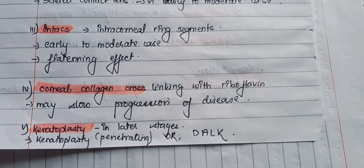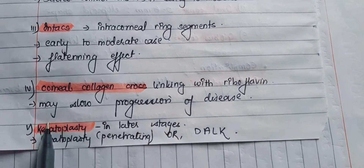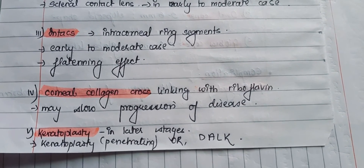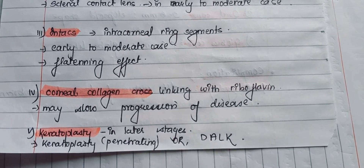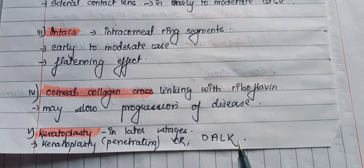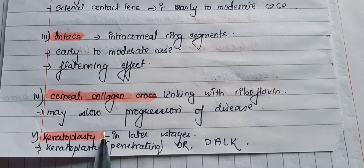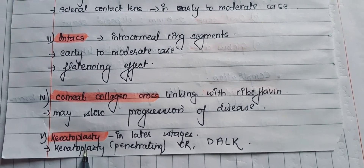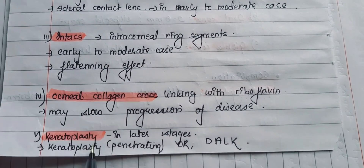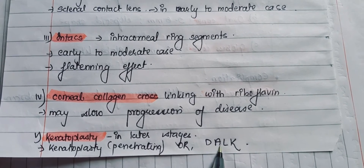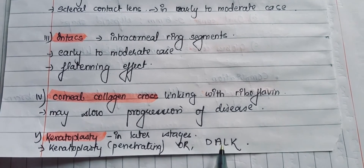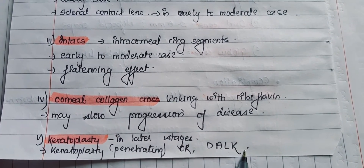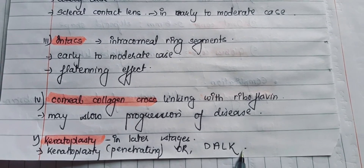In the later stages, keratoplasty or corneal transplantation can be done. Either penetrating keratoplasty or lamellar keratoplasty — specifically deep anterior lamellar keratoplasty — can be performed.